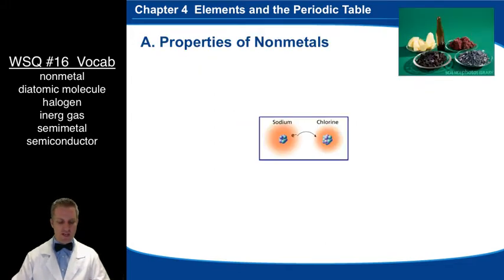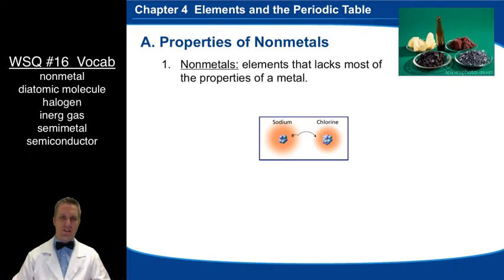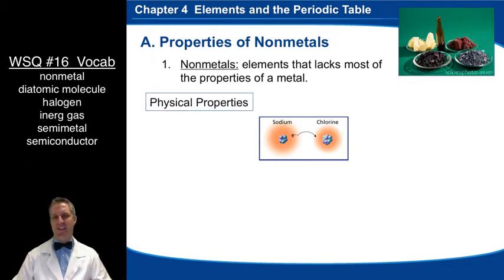First of all, let's start by talking about the properties of non-metals. Non-metals are basically elements that lack most of the properties of a metal. Very complicated definition, but basically if we look at the physical properties of metals, remember we would say metals are shiny, they have luster, they're malleable and ductile, you can shape them into things, hammer them into objects and shapes, those types of attributes.